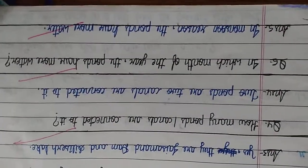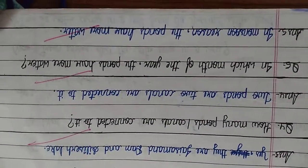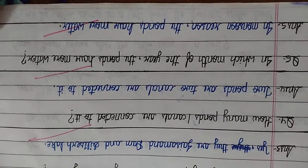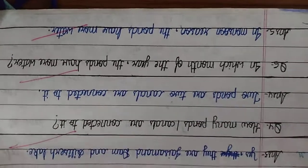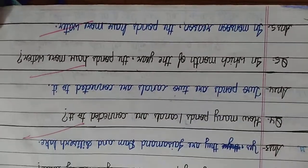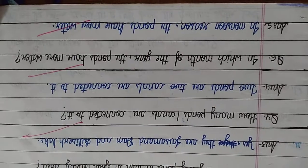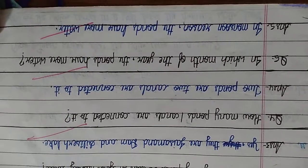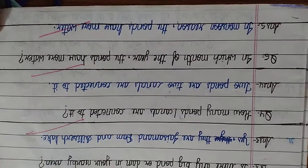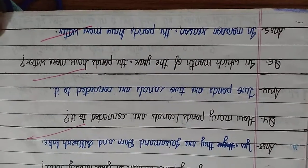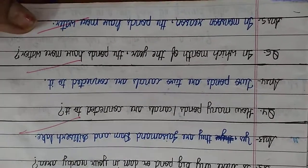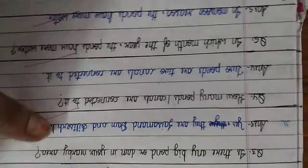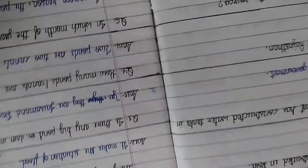In which month of the year do the ponds have more water? In monsoon season — baarish mein paani zyada hota hai ponds mein.